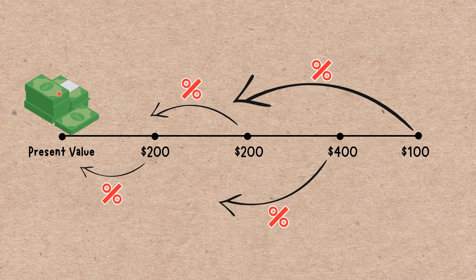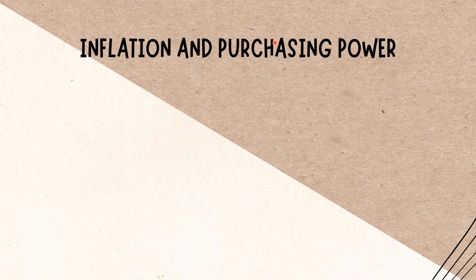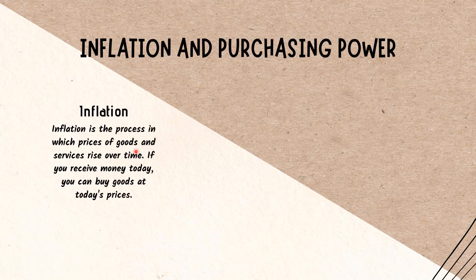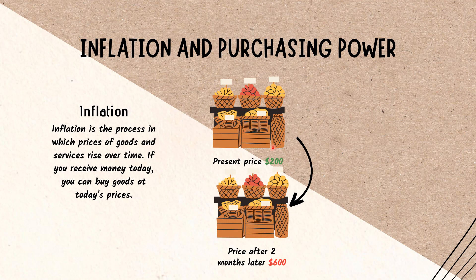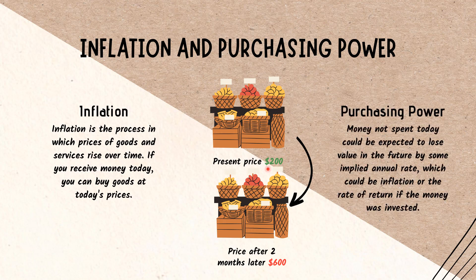Inflation and purchasing power: inflation is the process in which prices of goods and services rise over time. If you receive money today, you can buy goods at today's prices. Presumably, inflation will cause the price of goods to rise in the future, which would lower the purchasing power of your money. Money not spent today could be expected to lose value in the future.